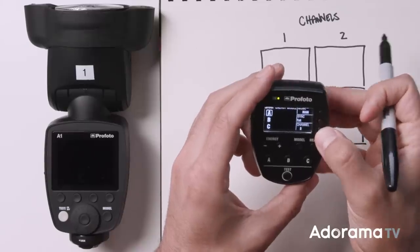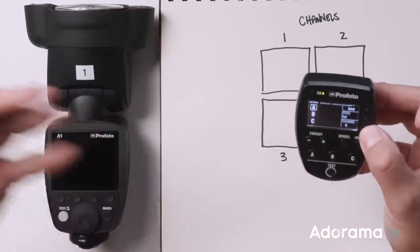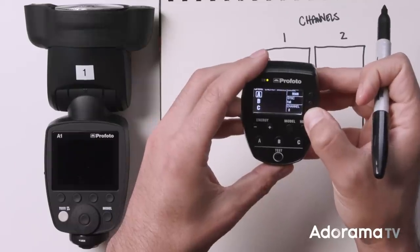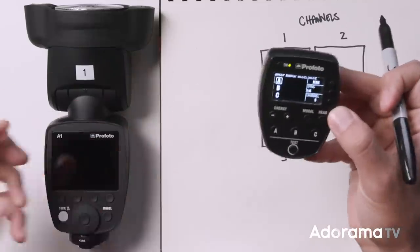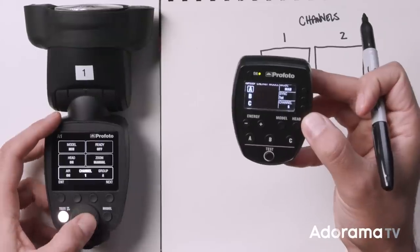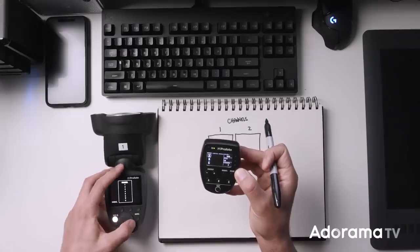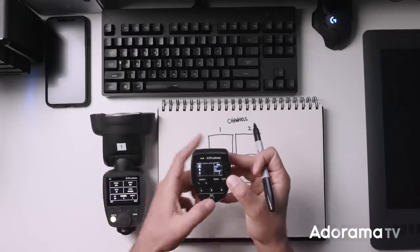But the other thing you can do is just simply change your channel. So if I feel like, hey, you know what, there might be a lot of people at this beach using Profoto. They're probably going to be using channel one. I'm going to go ahead and change the channel to like, let's go change it to six, something random that I don't think anybody else is going to be using. And I'm going to do the same thing on my flash. Once I have that set, I'm going to pop off a quick shot and we're good to go.